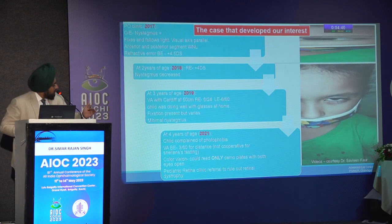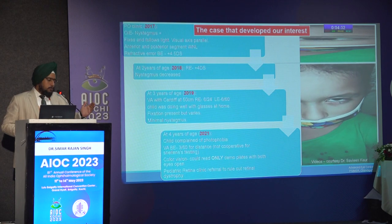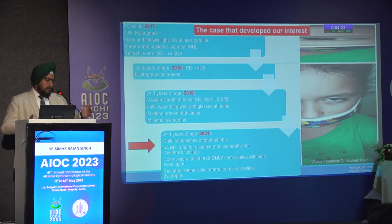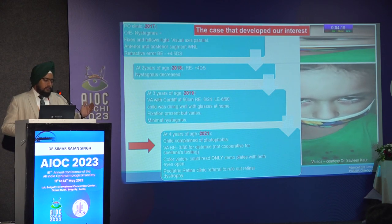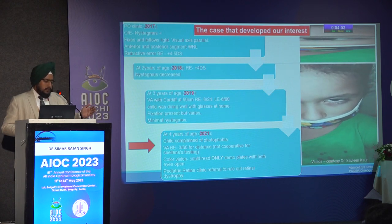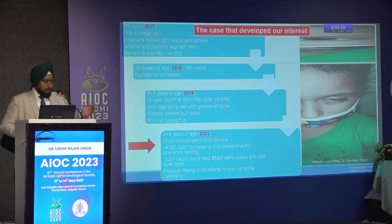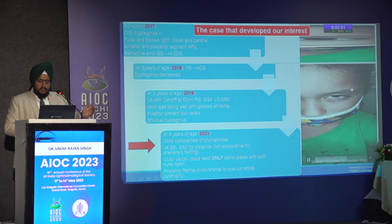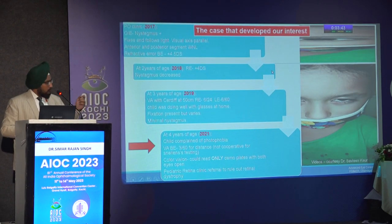The index case that developed clinical interest was seen at three months with complaints of inability to open eyes in bright light and nystagmus. Multiple investigations were done but nothing could be found; posterior segment was reported normal. At one year, nystagmus was decreasing but still no diagnosis. At four years in the dystrophy clinic, the child complained of photophobia and color vision could be recorded — the child could only read the demo plates. Videos show severe sensitivity to bright light (hemeralopia) and nystagmus.